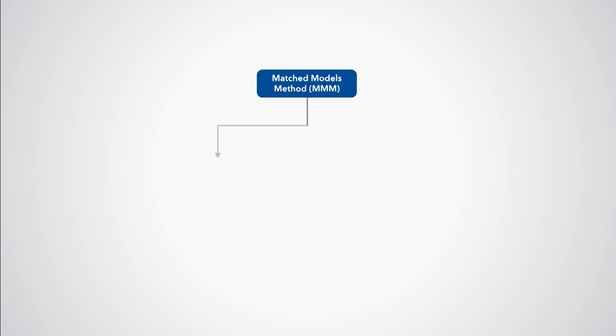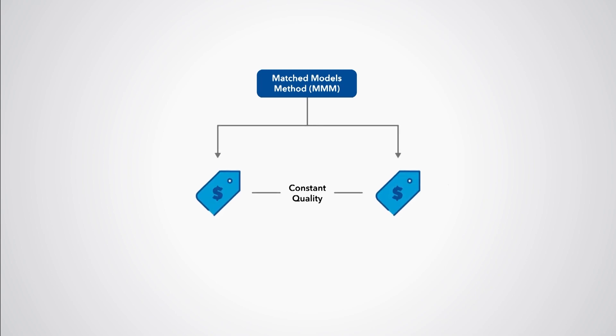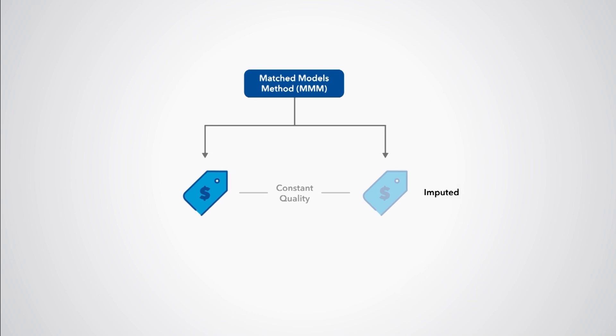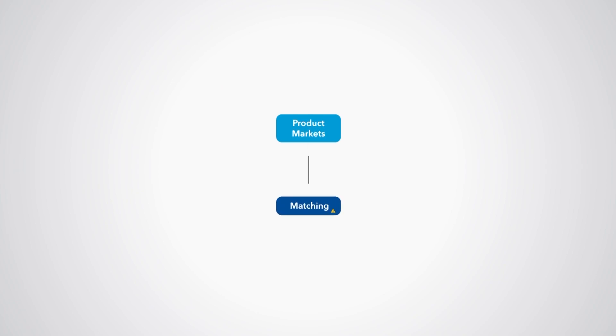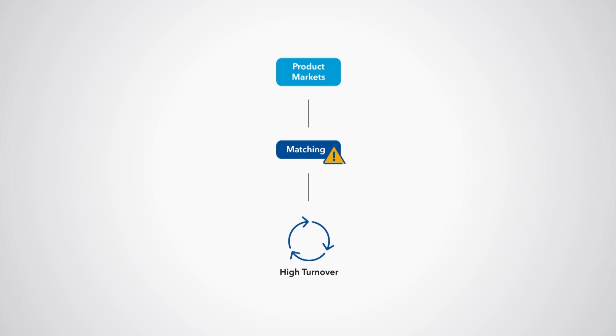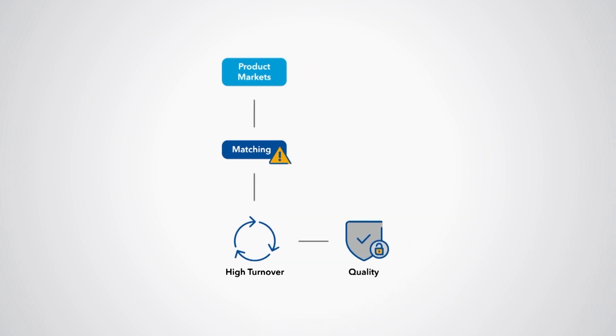The matching of models facilitates the measurement of constant quality price change. When the matching breaks down because of missing prices, temporary imputations are necessary until the variety's temporarily missing price becomes available or a replacement can be introduced. These imputations maintain or update the sample. However, there are product markets where the matching breaks down on a regular basis because of high turnover of models with new models of different quality compared to the old ones, for example laptops. A failure to match and replace models leads to a depleted and unrepresentative sample. A continual process of linking in new replacement varieties has been found to lead to bias in CPI measurement.